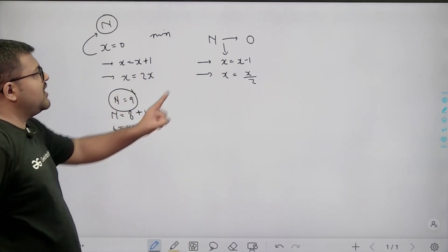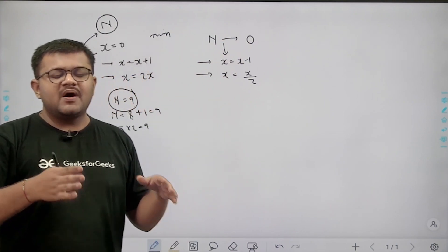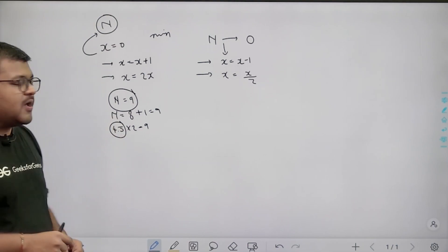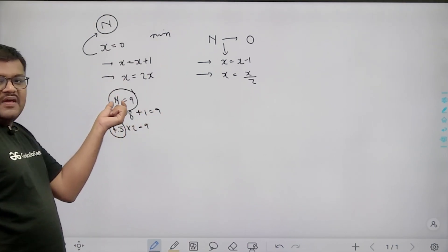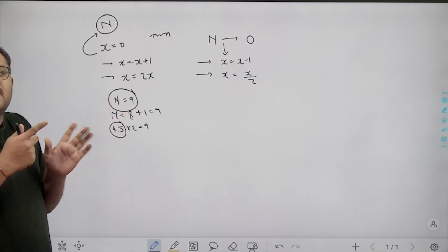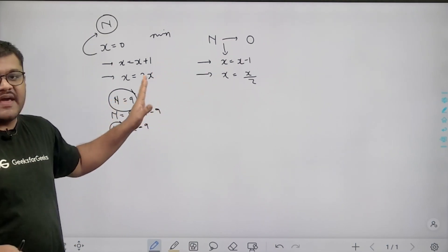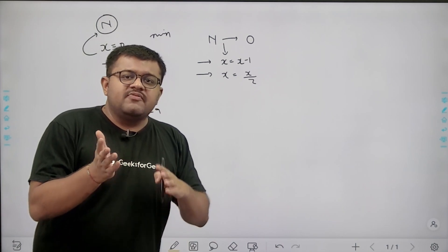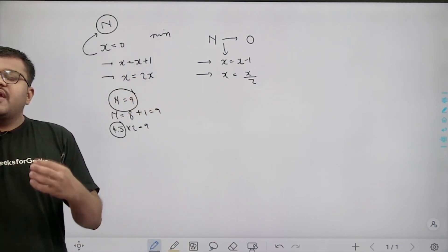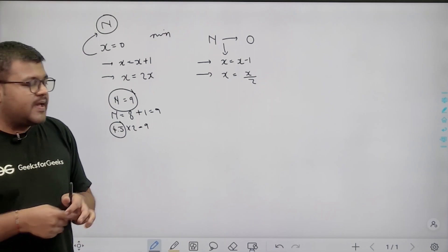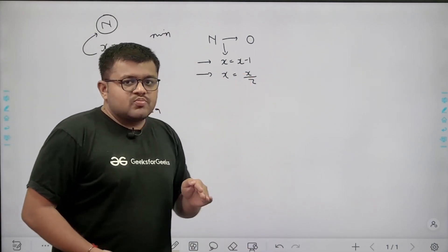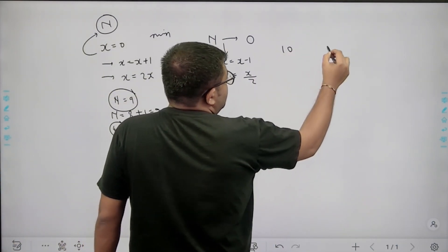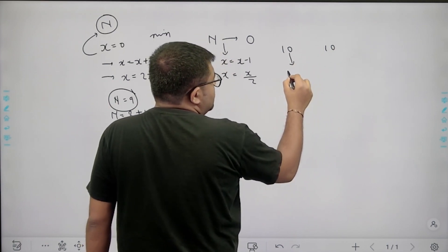So whenever the number is odd, the last step going forward would be adding 1, meaning in reverse we subtract 1. Whenever the number is even, we can either subtract 1 or divide by 2, but dividing by 2 is the best choice because it takes us to a smaller value in the minimum number of steps.